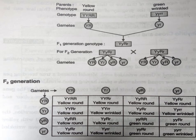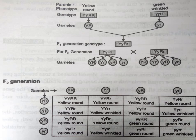A cross between two pure lines with two different pairs of contrasting characters is called a dihybrid cross. In this example, yellow round is crossed with green wrinkled seed. Mendel crossed a true breeding pea plant with yellow round seeds with a plant having green wrinkled seeds. The gametes are separated as capital YR and small yr. In the F1 generation, all plants had yellow round seeds, indicating that the genes for yellow color and round seed were dominant over green color and wrinkled seed respectively. So in the F1 generation, the genotypic ratio will be YYRR.